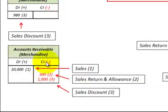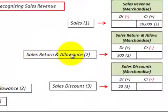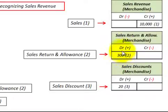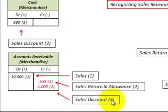Next, let's look at a sales return and allowance. Say a customer returns three hundred dollars worth of goods. We credit accounts receivable, reducing it by three hundred dollars. The associated entry would be to debit sales returns and allowances for three hundred dollars, which increases the sales returns and allowances account.